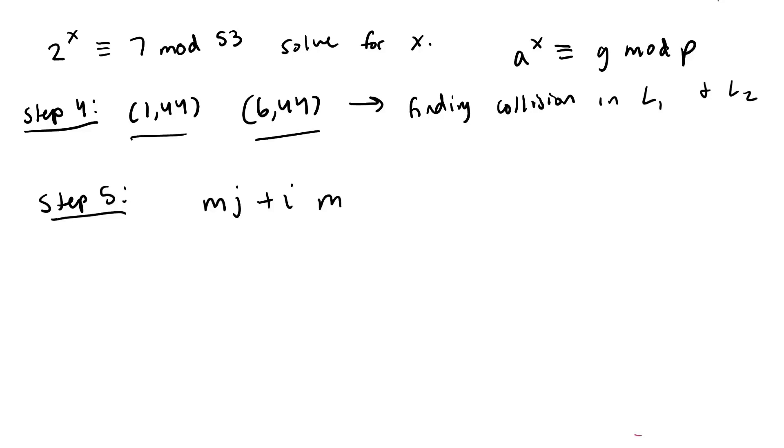And this equals 8 which is our M times 1 which is our J and I which is 6 mod P which was 53 from our original equation. So now we just calculate this we have 14 mod 53.